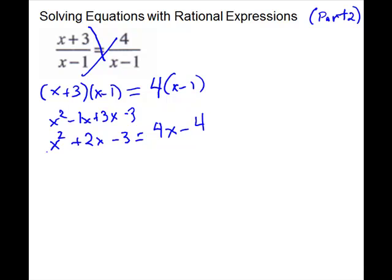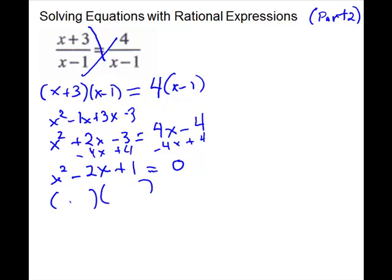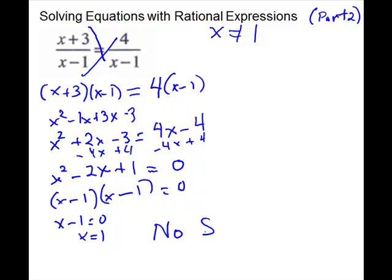It's a quadratic, so get 0 on one side. Subtract 4x to get x squared minus 2x, and add 4 to get x squared minus 2x plus 1 equals 0. This factors — both signs are minus — giving (x minus 1) squared. Setting x minus 1 equal to 0 gives x equals 1. But I forgot to state my exclusions first: x cannot equal 1. Since we get 1 as our answer, there is no solution. Always state your exclusions first.